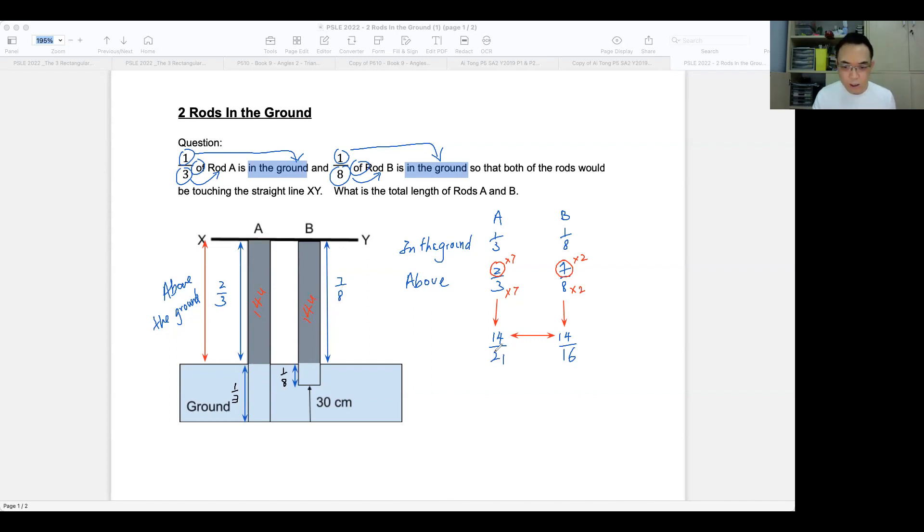Next, this 21 here represents the whole length of A. The 16 here represents the whole length of B. So if 21 is the whole length of A and 14 of it is above the ground, then this portion is 7 units because 21 minus 14. Now, I'm not writing this out because that is not required in the question, but I'm using this to teach. Likewise, I will take 16, which is the entire rod of B minus the 14, which is above the ground to get 2 units, which is below the ground. So I hope you understand so far.